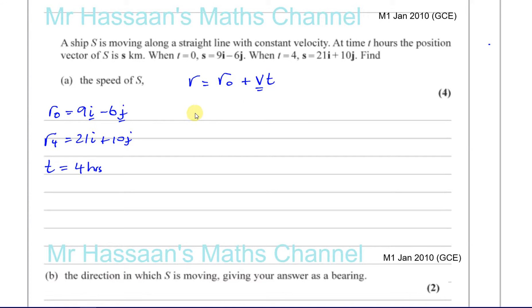We know that its position at four is 21i plus 10j. I'm just writing it as a column vector. That's equal to its initial position, which is 9i minus 6j, plus its velocity vector, which we have to find. I'm going to call that xi plus yj times the time, which is four.